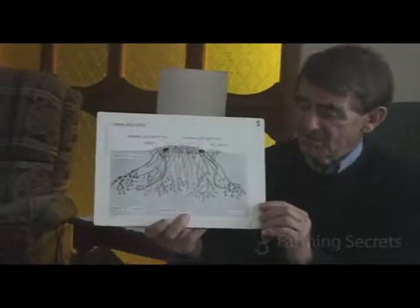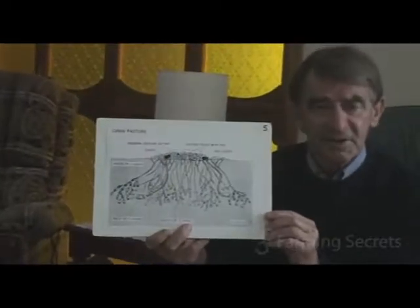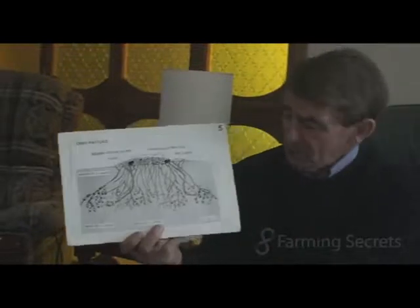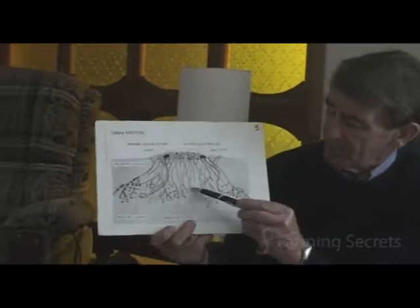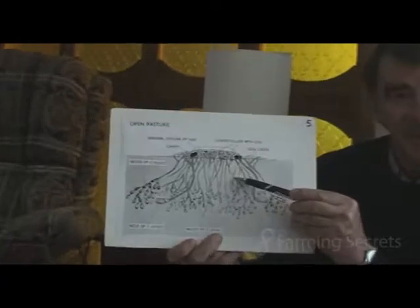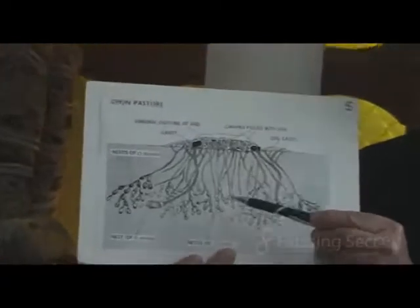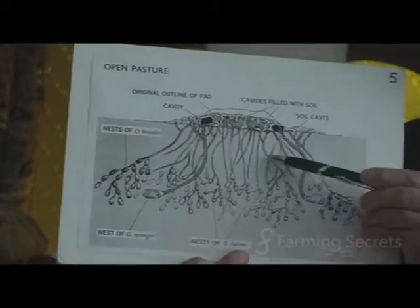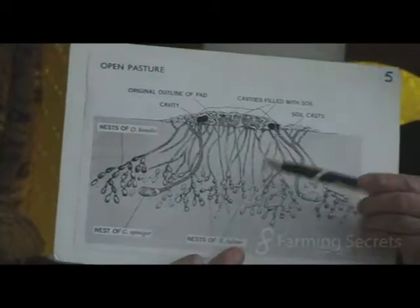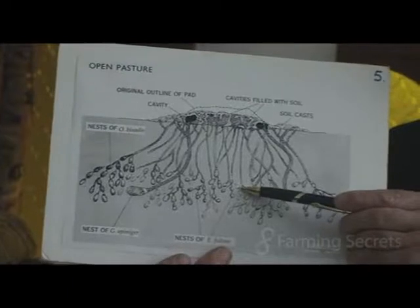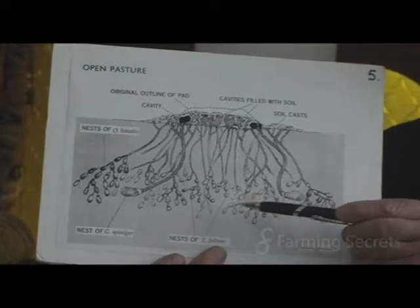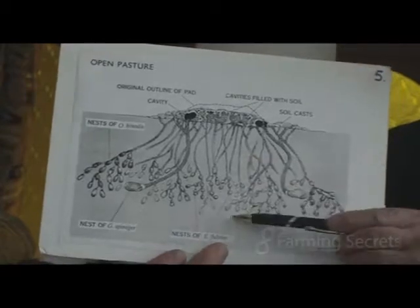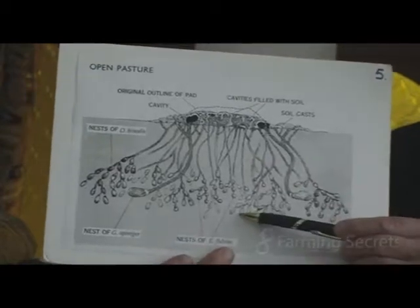This is a CSIRO illustration, though it's not as accurate as it should be. The smaller brood balls only go down to a depth of about 100 millimetres. The medium-sized beetles that produce larger balls place them 100 to 200 millimetres into the soil, and the larger beetles place them from about 100 millimetres down to a depth of about 300 millimetres.